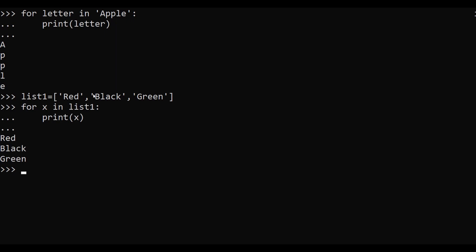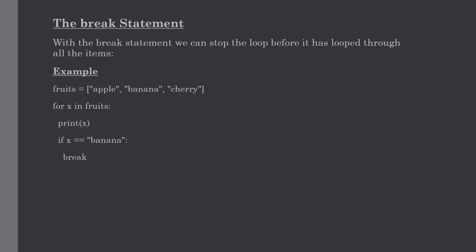Our next topic is the break statement. With the break statement, we can stop the loop before it has looped through all the items. In this example, we have created one list with three items. If you want to skip the second item in the for loop, we can do that using the break statement. Whenever the iterator's value equals our second item, it will stop its execution and the loop ends before going through all the items.